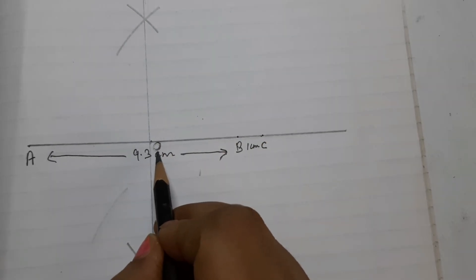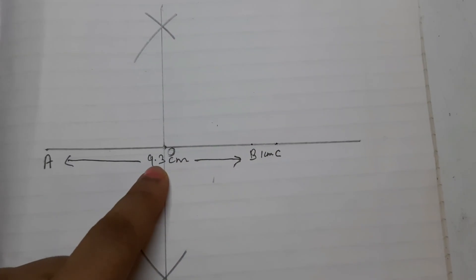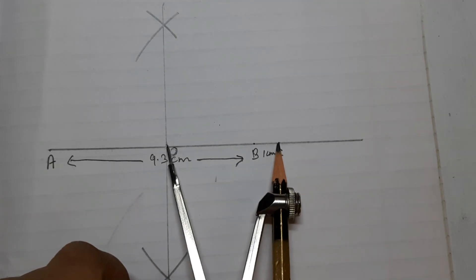This midpoint is O. Draw a semicircle with center O and radius OC.